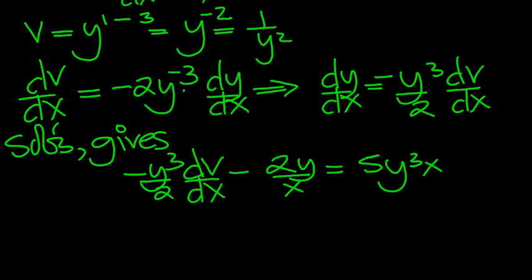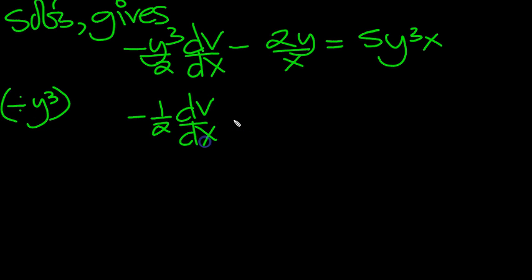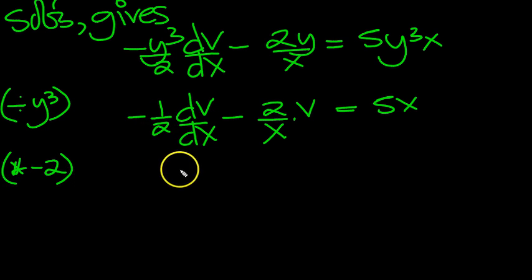Now divide by the y cubed all the way through. So divide by y cubed. See what we get there. So we get minus 1 half, dv/dx, minus 2 over x. Now one of the y's will cancel. 1 over y squared is v, so we can put that in straight away. And that's 5x.